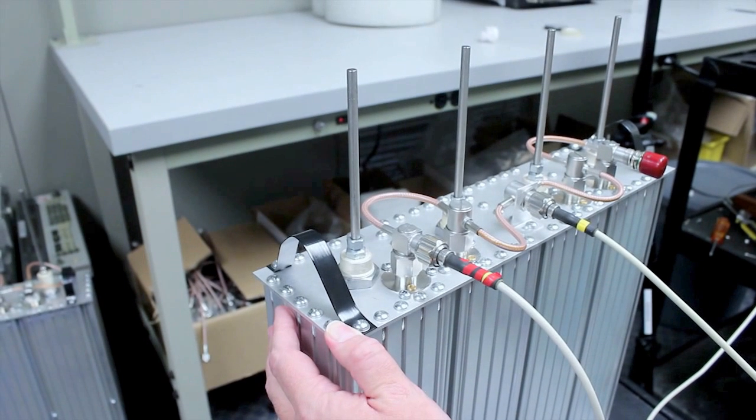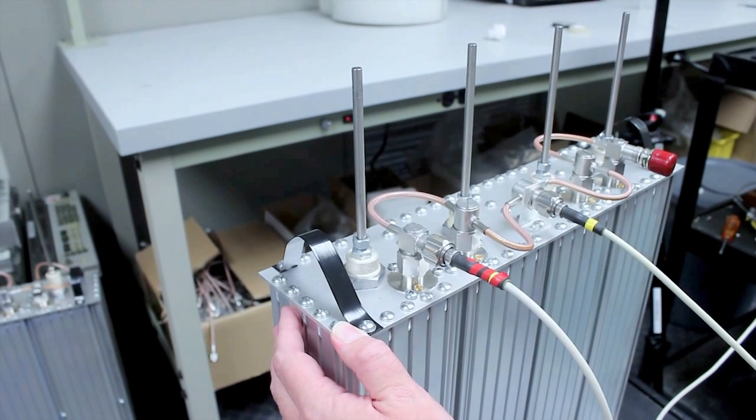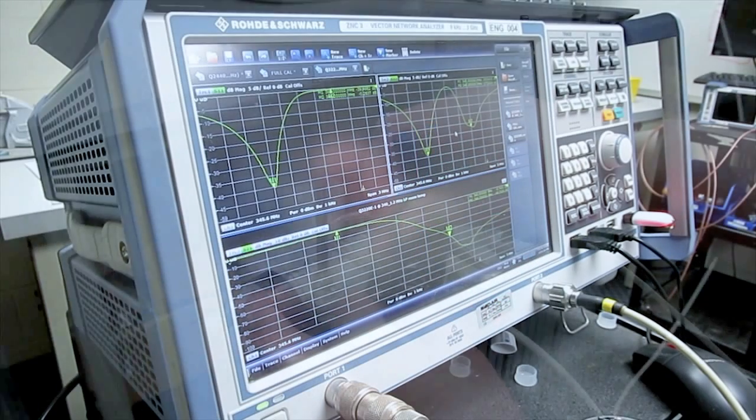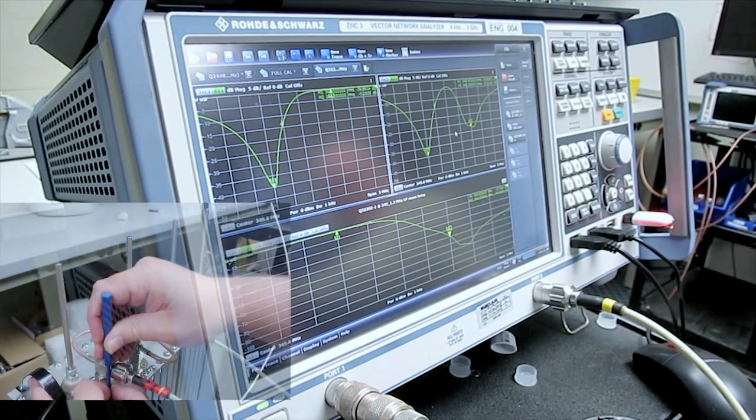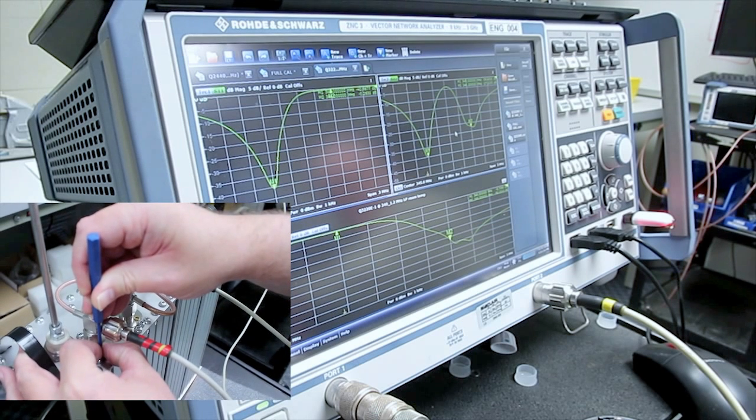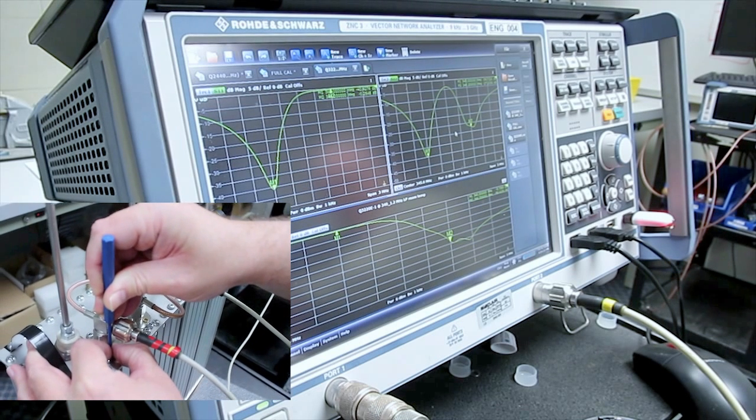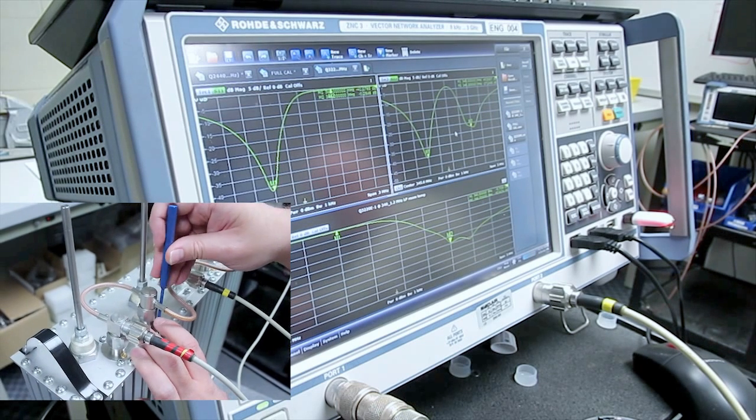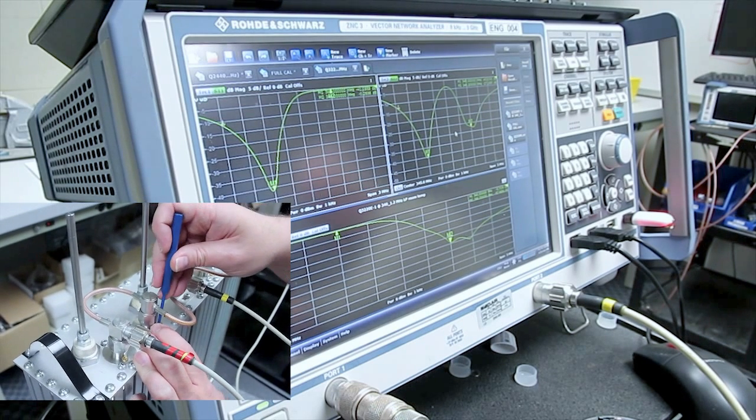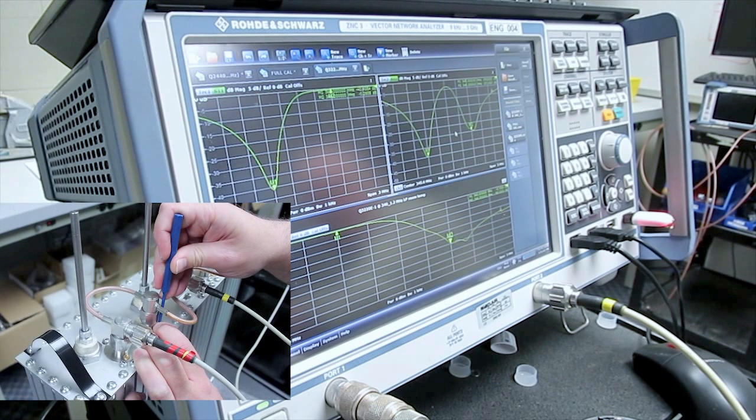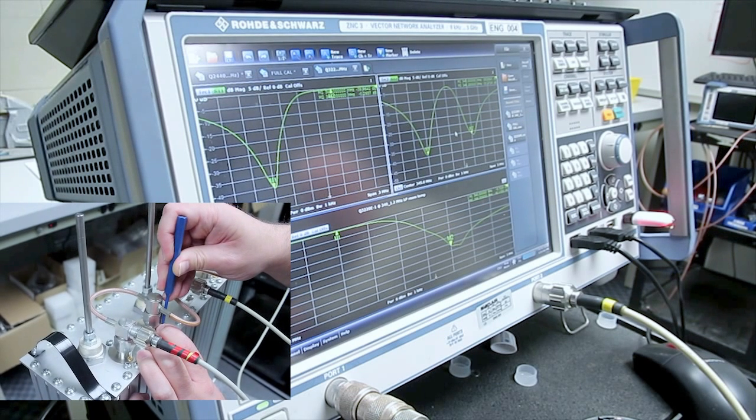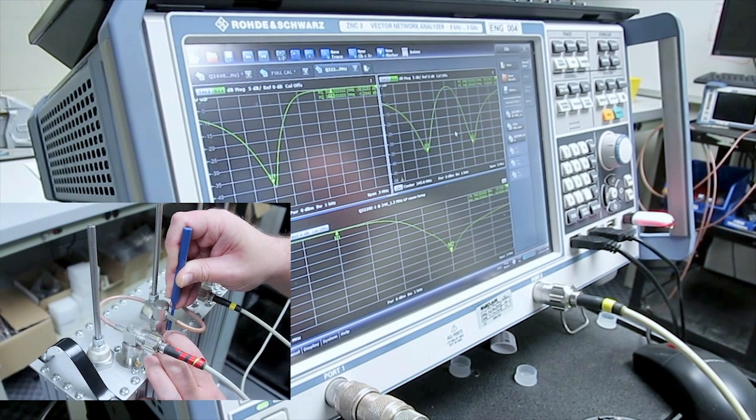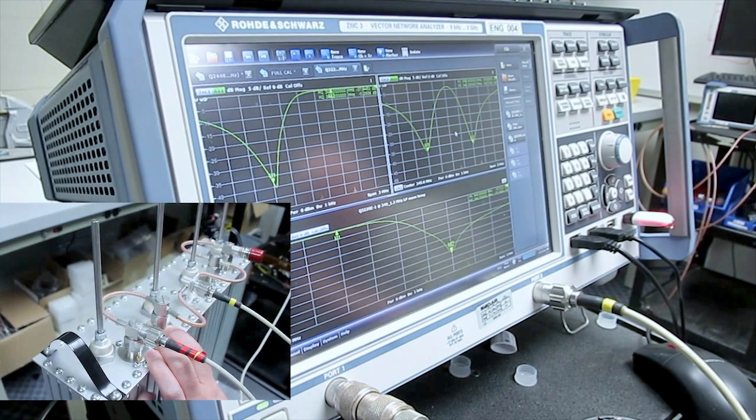And we can see from the analyzer plot that the notch is not quite on frequency. So what we do is we do a final adjustment to the notch. That is one cavity. And the other cavity. Okay.